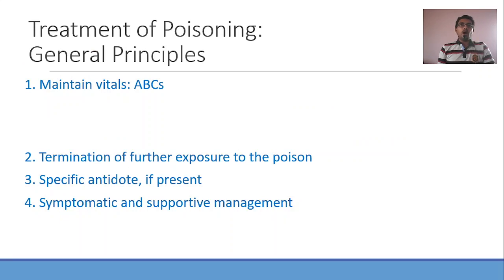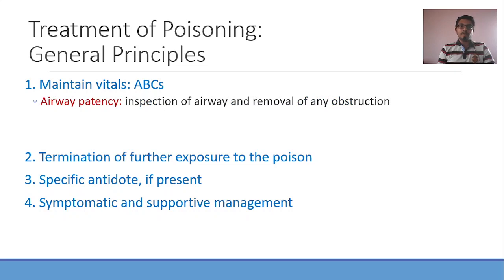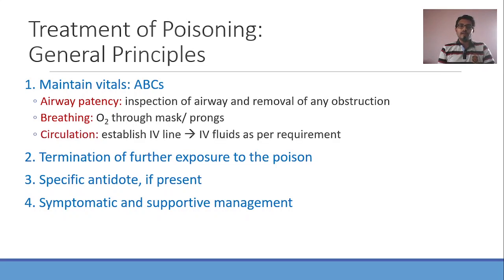How do you treat OP compound poisoning? First, let us see the general principles of treatment of poisoning. There are four major principles. First, stabilize the patient — maintain the vitals, ABCs: A for airway patency and removal of any obstruction, B for breathing — give oxygen through mask or prongs, C for circulation — establish an IV line and give IV fluids as required. You have to stabilize the patient first; everything else comes later.